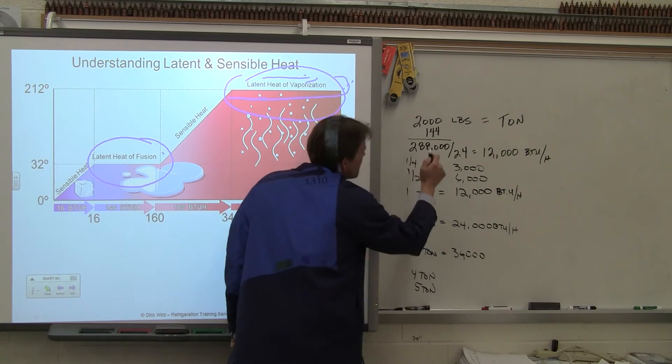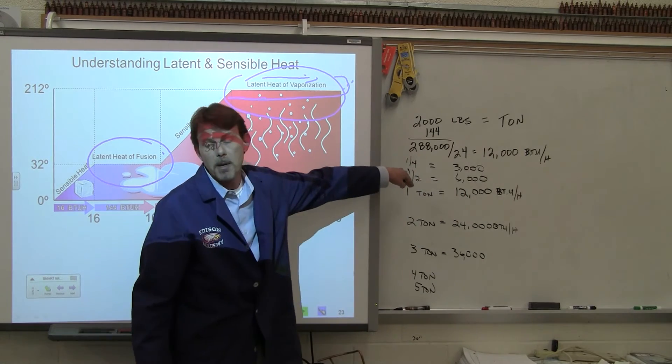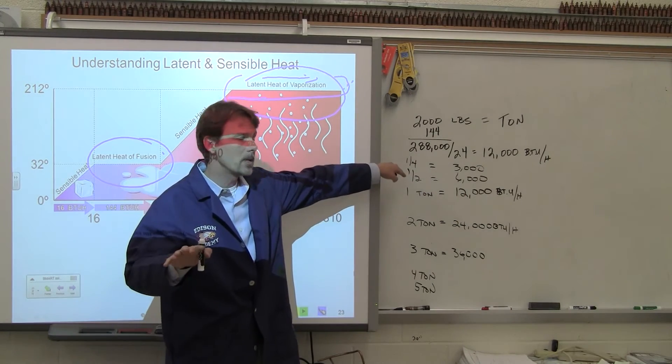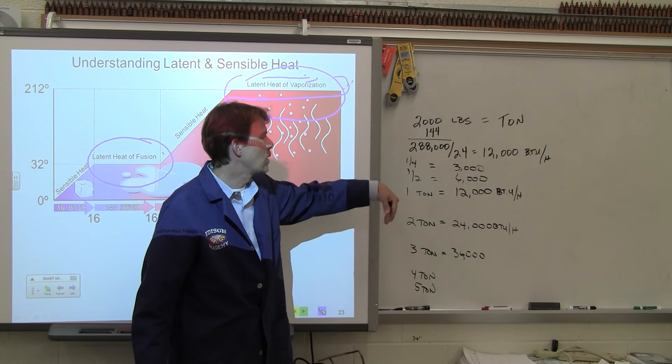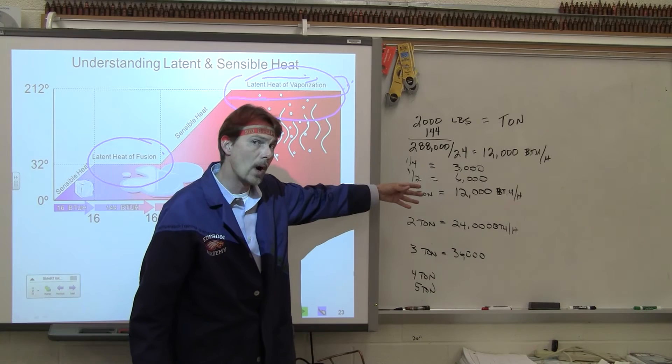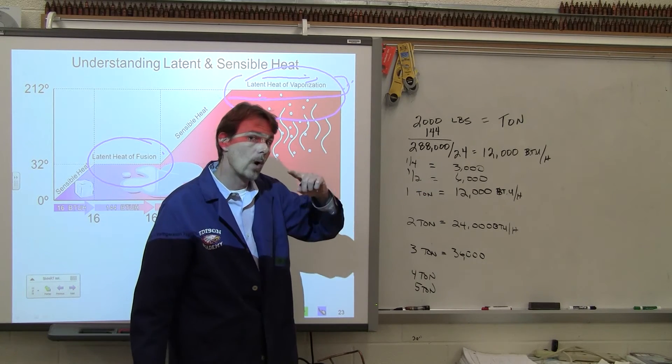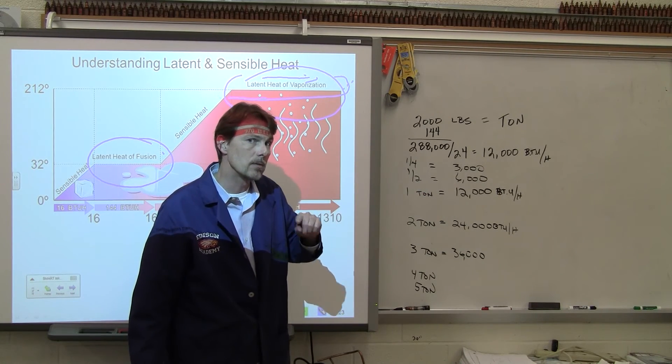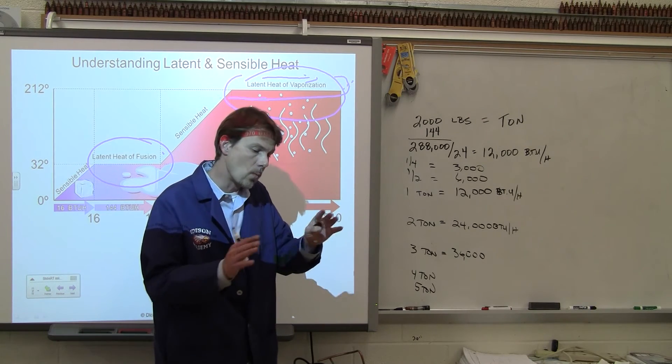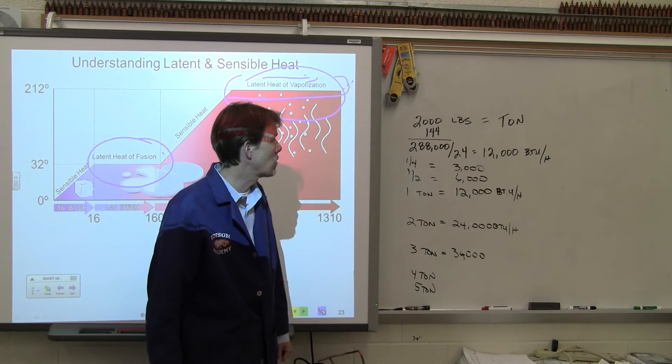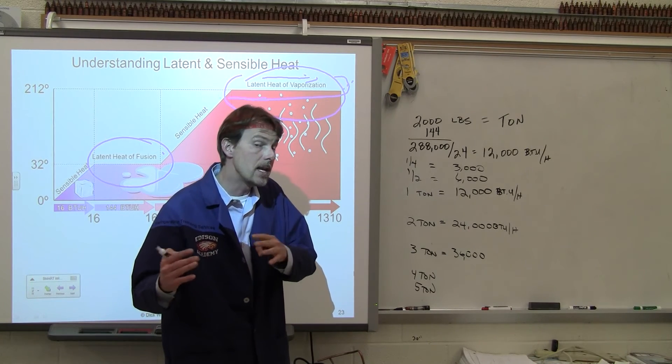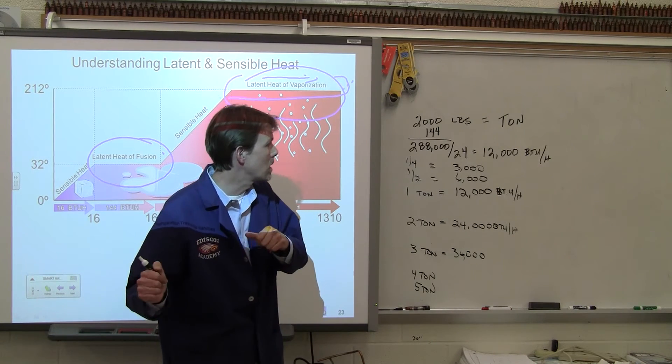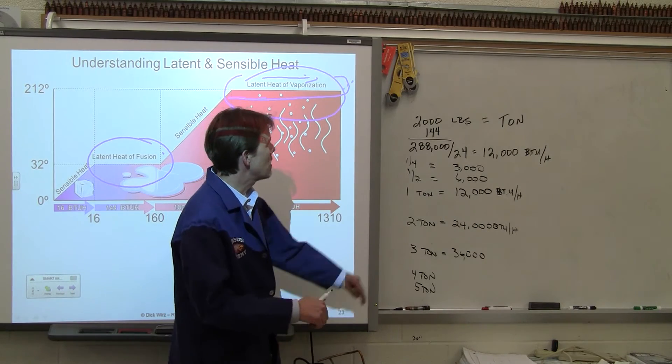And then a quarter ton is 3,000 BTUs. Usually for refrigeration, anything smaller than half or quarter, we start talking about horsepower. That's a different formula we have to do, a different calculation, because they figure out that one horsepower equals 746 watts. And then one watt, it takes 3.4 BTUs to generate one watt of electricity, or we can use one watt of electricity to generate 3.4 watts of heat.